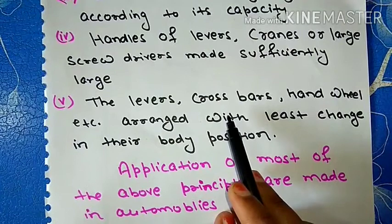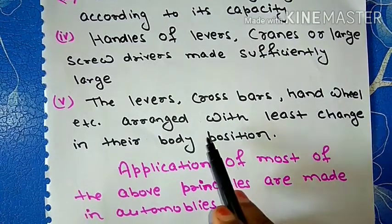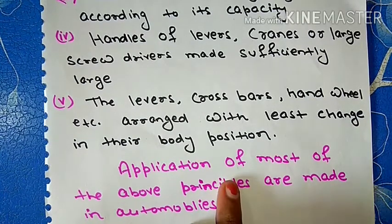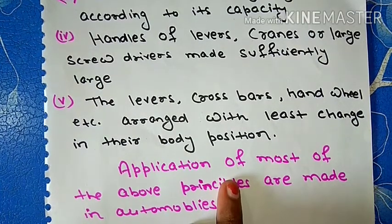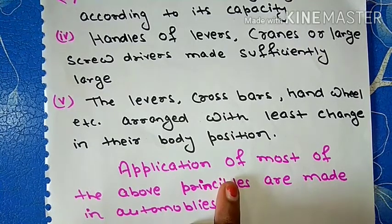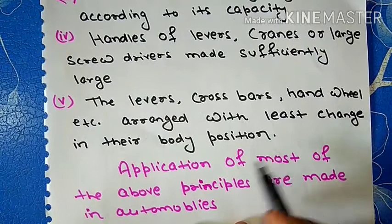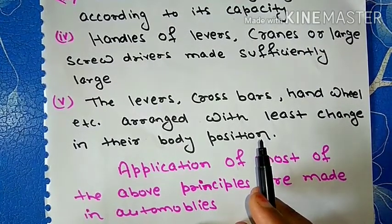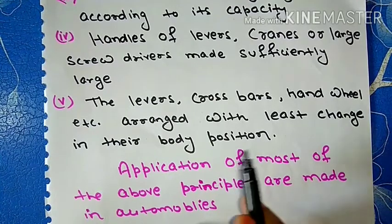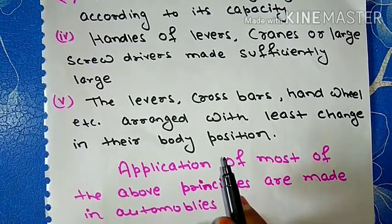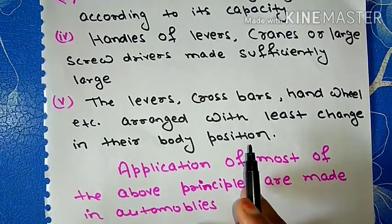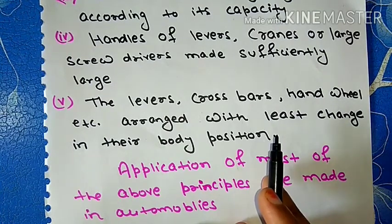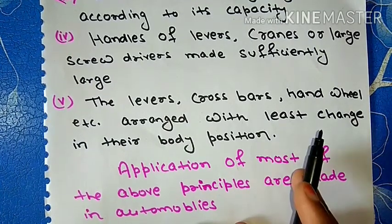Last point: the levers, crossbars, hand wheels, etc. should be arranged such that operator can use them with minimum change in body position. That means, levers, hand wheels, etc. should be arranged such that the operator's body position movement is minimized, so that according to therbligs, time can be saved, means less time is required.